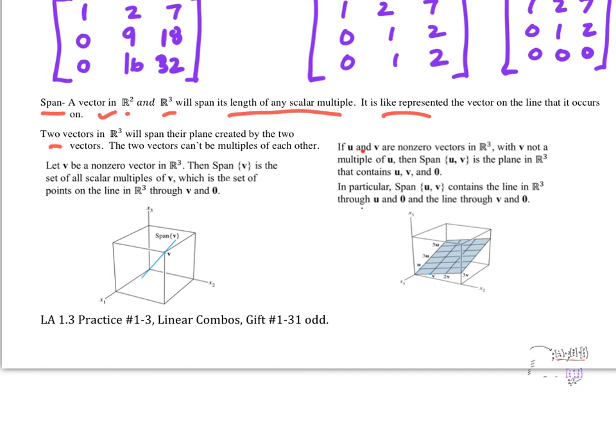And then if I have two vectors, if U and V are non-zero vectors in R3, with V not a multiple of U, then span UV is the plane in R3 that contains U, V, and the zero vector. In particular, span U, V contains the line in R3 through U and zero and the line through V and zero. So in other words, this is U, and this is the line that U is on. This is V, and this is the line that V is on. And so the plane that's created by these two spans is going to be the span of those two vectors. We'll talk about this a little bit more in class. I've got to try to make something up for you to practice this.